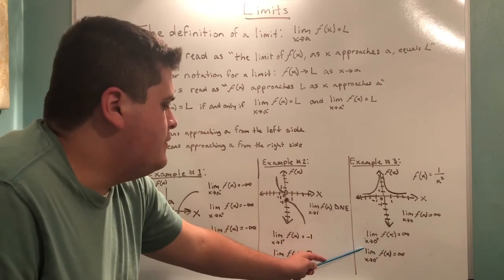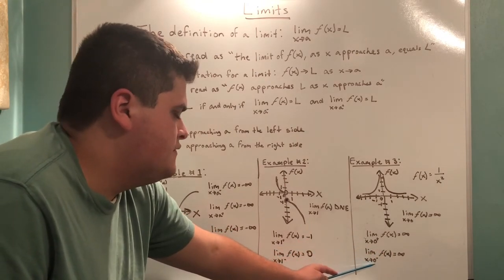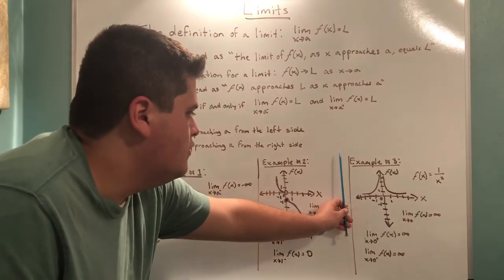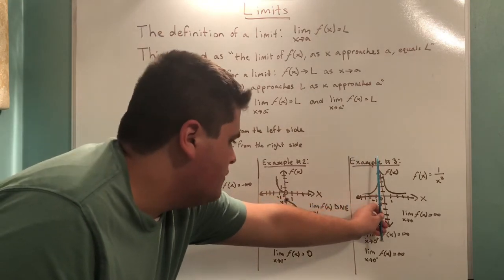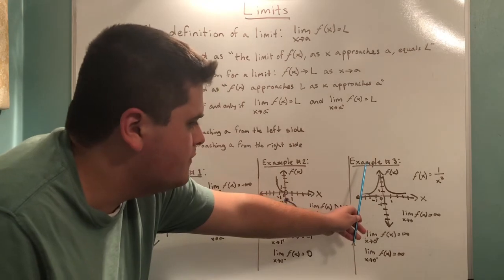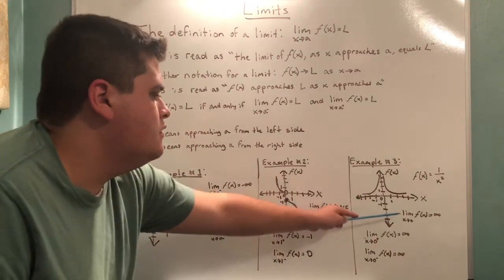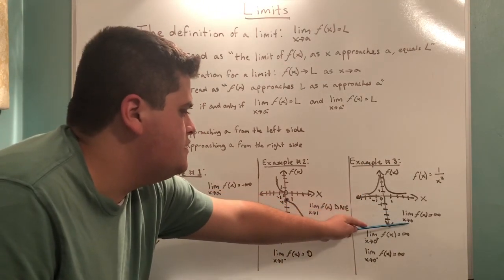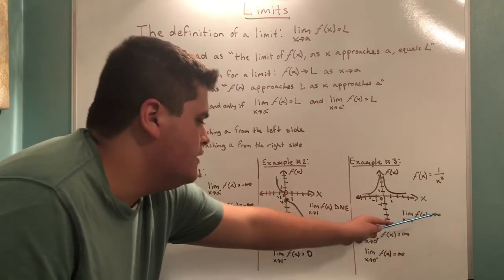Now, we need to evaluate the limit as x approaches 0 from the left. We start at the left and work our way right towards the value 0. We find that it, too, also approaches infinity. Therefore, we can conclude that the limit as x approaches 0 of f(x) is equal to infinity.